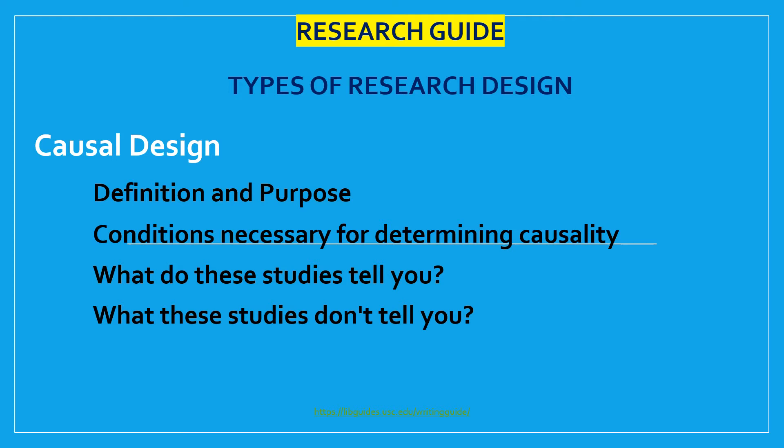The conditions necessary for determining causality are: first, empirical association — a valid conclusion is based on finding an association between the independent variable and the dependent variable. Second, appropriate time order — to conclude that causation was involved, one must see that cases were exposed to variation in the independent variable before variation in the dependent variable. Third, non-spuriousness — a relationship between two variables that is not due to variation in a third variable.